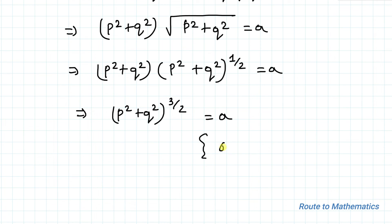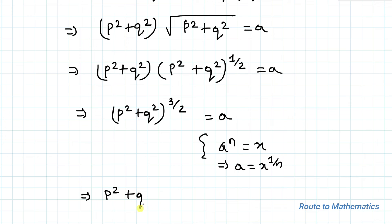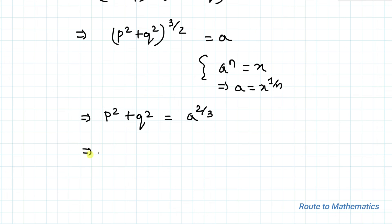We know the exponential law: if a^n = x, then a = x^(1/n) — the power becomes reciprocal when moved to the other side. Similarly, p² + q² = a^(2/3), which can be written as p² + q² = (a²)^(1/3).